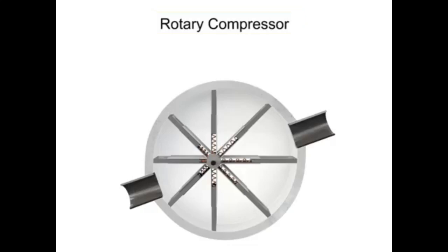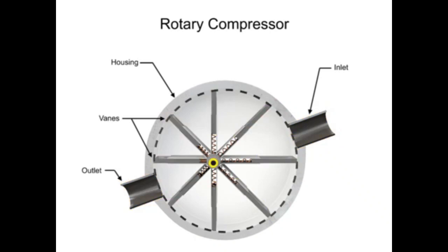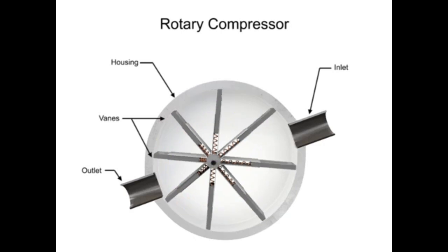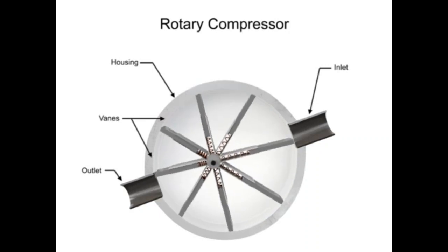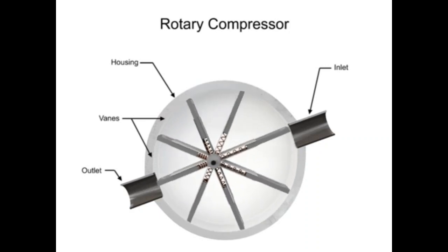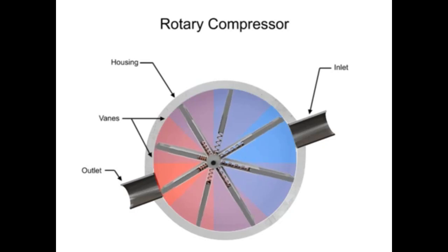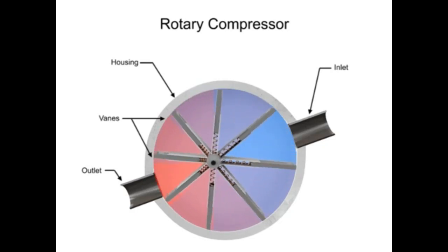Rotary compressors typically consist of a cylindrical housing with adjustable rotary vanes, an inlet, and an outlet. The vanes are on an off-center drive shaft. As the shaft rotates, the vanes slide in and out to maintain contact with a cylindrical compressor wall. As they do, they create chambers within the cylinder of varying sizes.